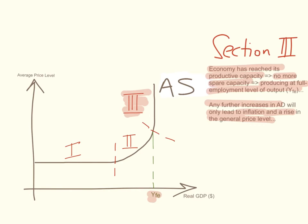So Keynesians do agree with the monetarists that once the economy reaches full employment, any increase in aggregate demand will be inflationary — it will only lead to a rise in the average price level without an increase in real output. However, they disagree that if there is spare capacity: in section one, increases in aggregate demand could increase real output without causing any inflation; in section two, they could increase real output without much inflation.